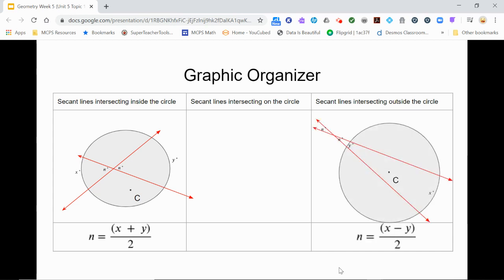When they intersect outside the circle, twice the measures of the vertical angles equals the difference of the measures of the intercepted arcs. Or the measure of each vertical angle is half the difference of the measures of the intercepted arcs.